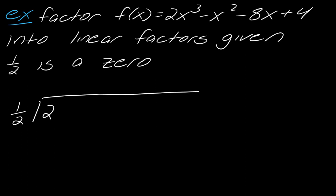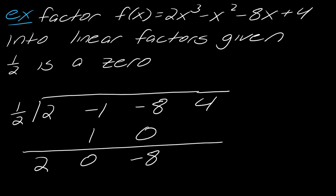So, I have 2x cubed minus, oops, what am I doing? So, 2 minus 1, negative 8, and 4. Alright, there we go. So, bring the 2 down. 2 times 1 half is 1. Negative 1 plus 1 is 0. 0 times 1 half is 0. Negative 8 plus 0 is negative 8. And negative 8 times 1 half is negative 4. So, that gives me a 0.